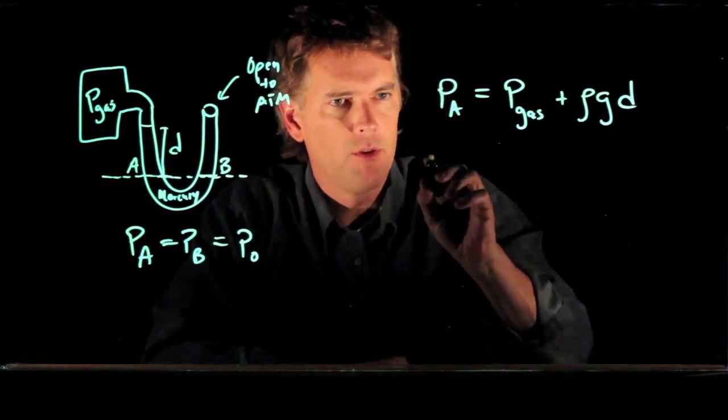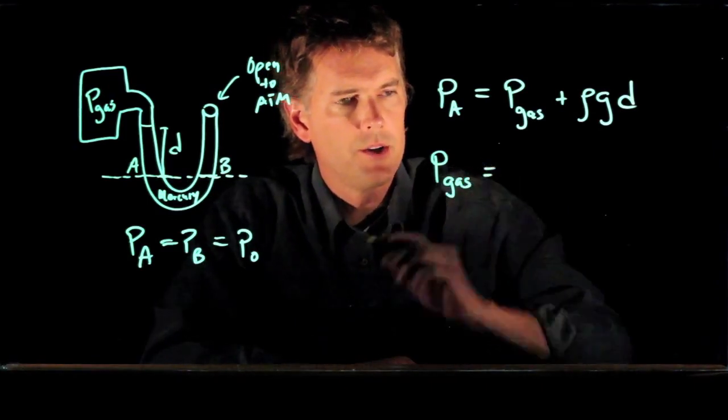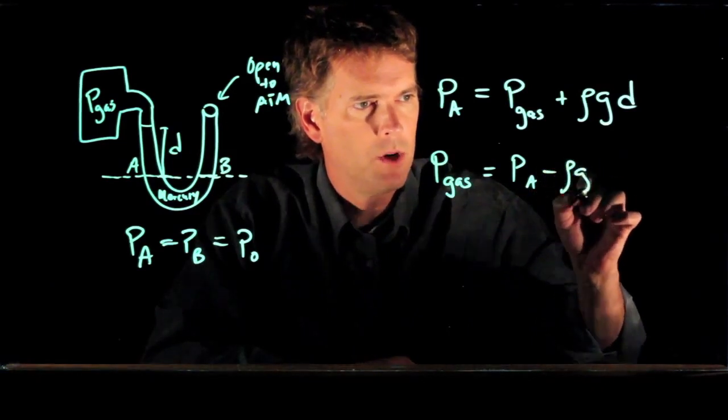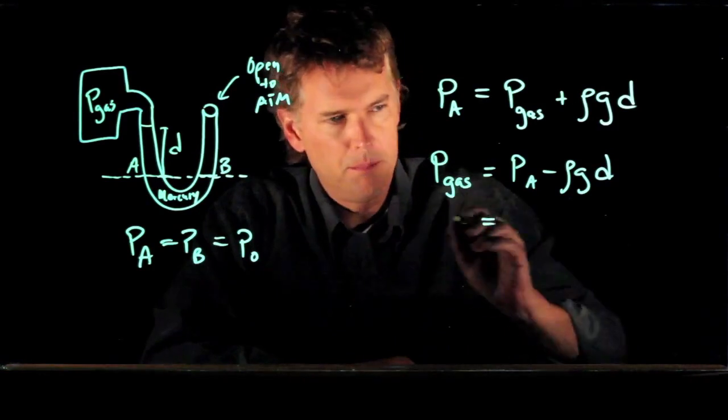And so now we can solve this for pressure in the gas chamber. Pressure in the gas chamber is P A minus rho G D. P A, we just said, was P nought.